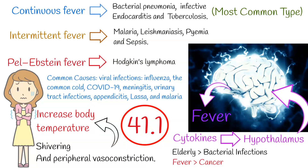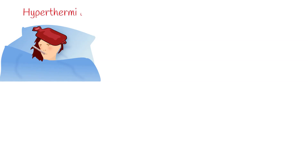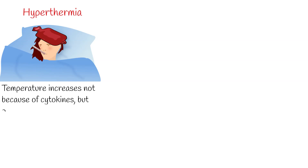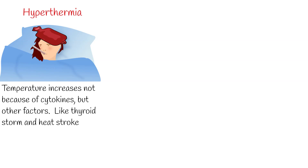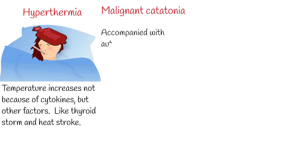Fever plus rash and eosinophilia defines drug reactions. High body temperature in the first trimester of pregnancy may cause birth defects. Hyperthermia is when body temperature increases not because of cytokines, but other factors, like thyroid storm and heat stroke. These cases are important because during hyperthermia body temperature can exceed more than 41 degrees Celsius, resulting in irreversible denaturation of proteins in the brain. Malignant catatonia is a disorder in which hyperthermia is accompanied with autonomic instability and altered mental status.